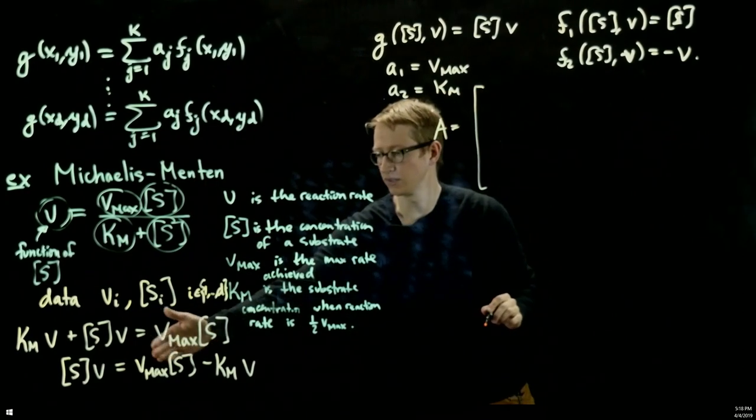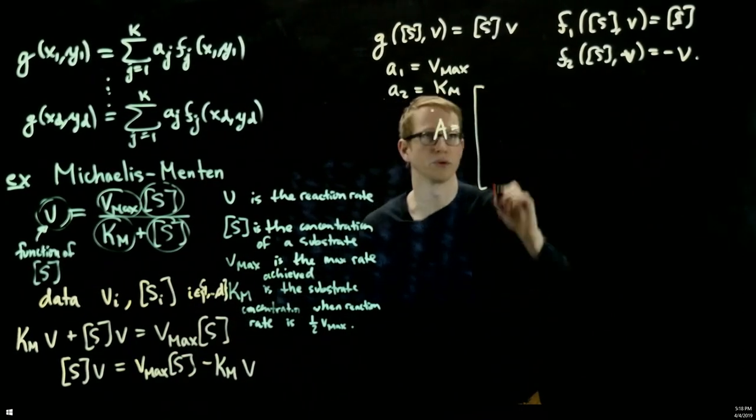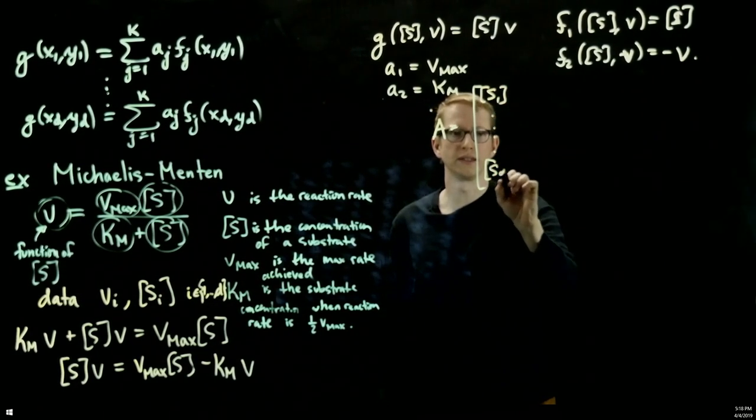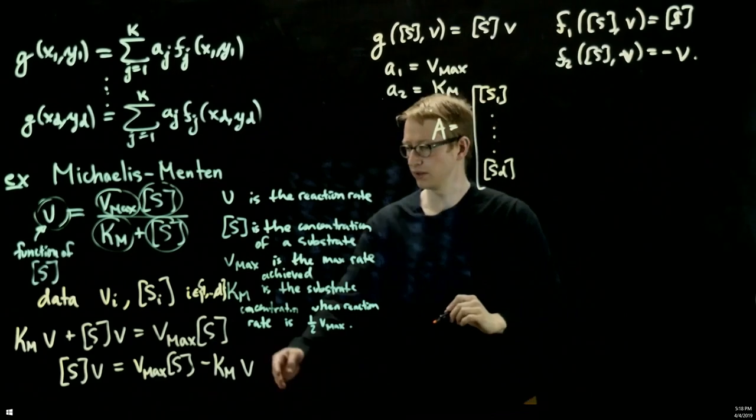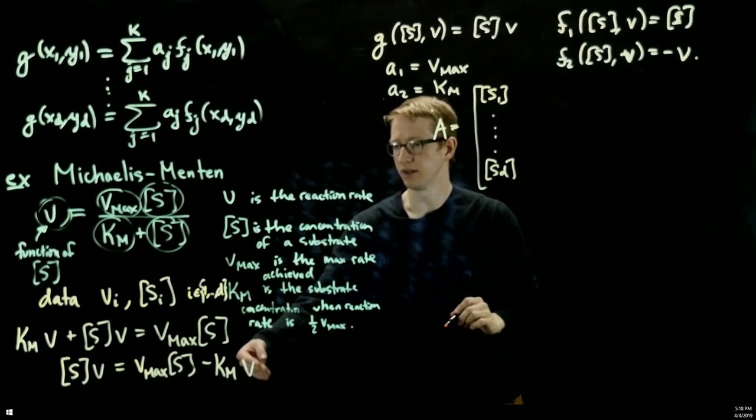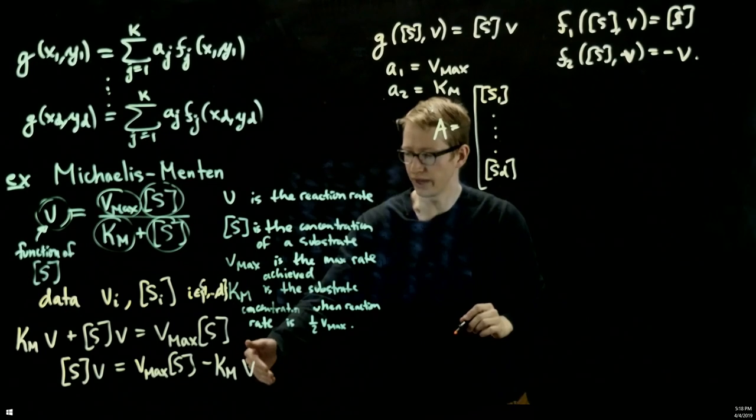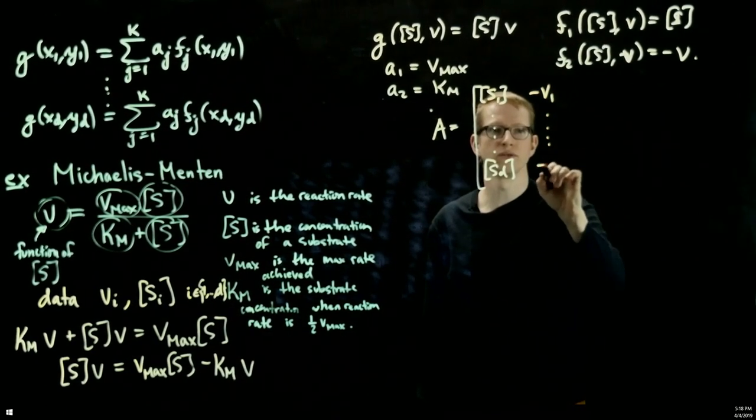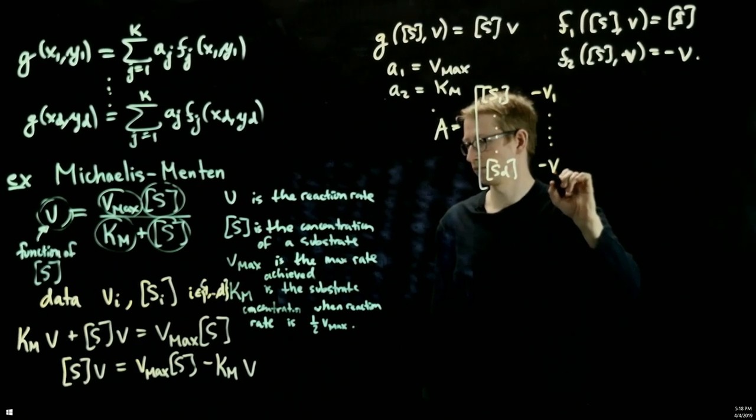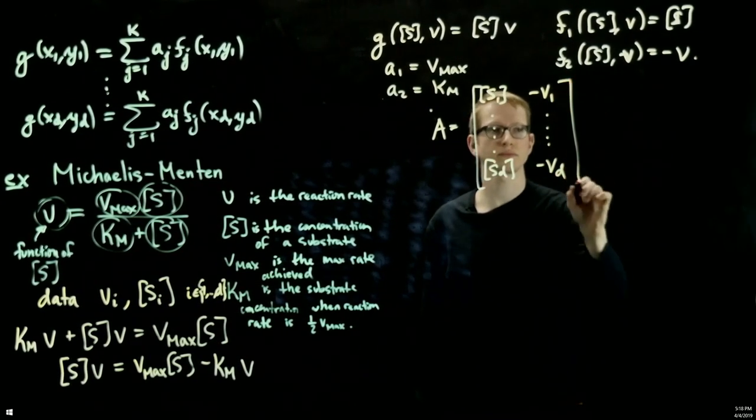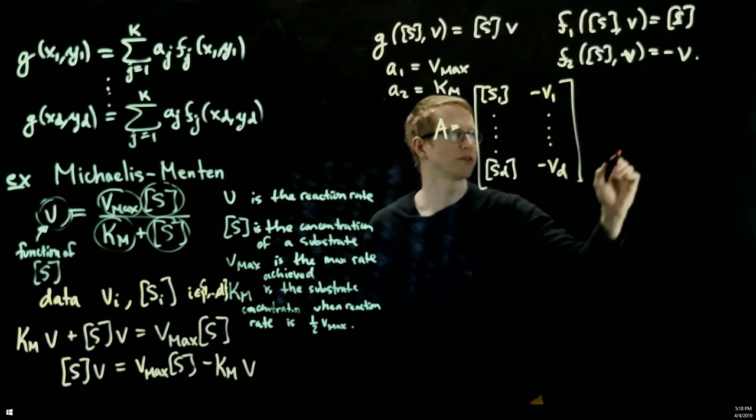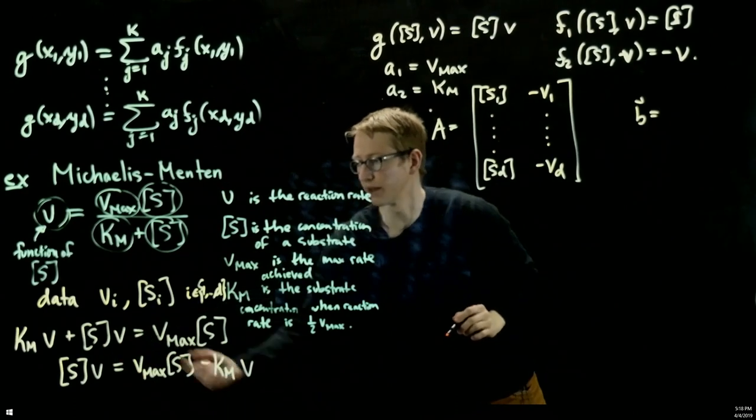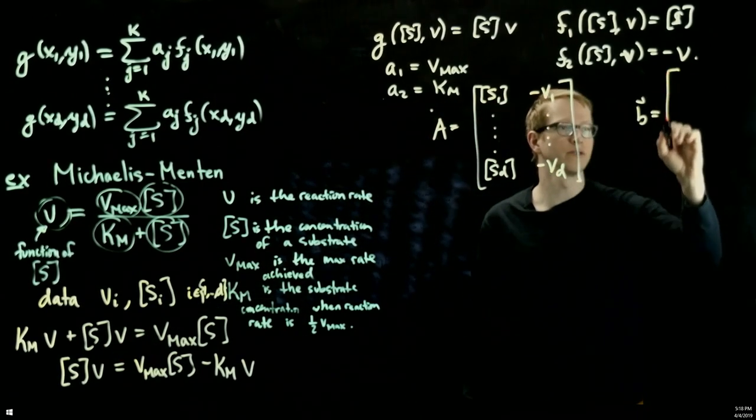We can construct our matrix A to B. The first column consists of all of the substrate concentrations that we're working with. So s1 all the way down to sd, and negative v, negative the reaction rate that we find for each of those substrate concentrations. So negative v1 all the way down to negative vd. And our vector B, in this case, is actually the product of si with vi.